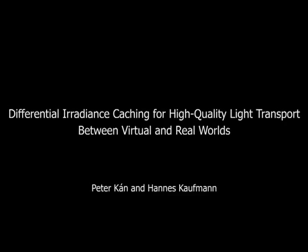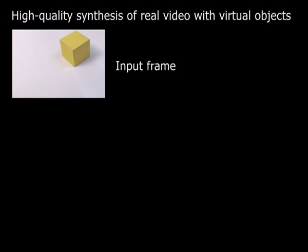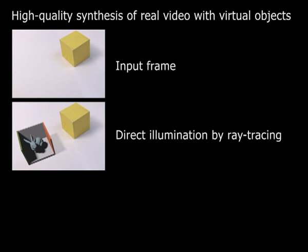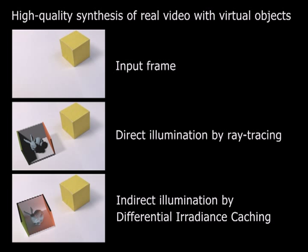We present a novel method that calculates high-quality light transport between real and virtual worlds at interactive frame rates. To synthesize a video with computer-generated content, we first take an input frame. In the following steps, we consider inter-reflections between real and virtual objects. We use ray tracing to calculate differential direct lighting of the mixed reality scene, and use our new differential irradiance caching algorithm to calculate the indirect illumination of the mixed scene.